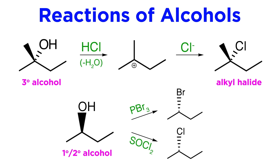Primary and secondary alkyl halides are more easily converted by using reagents like PBr3 or SOCl2, which will replace the hydroxyl with a bromo or chloro group respectively, with inversion of stereochemistry via SN2 reaction.